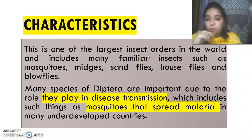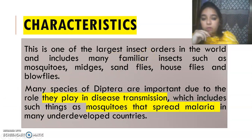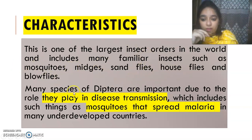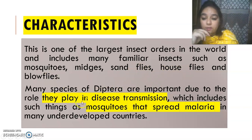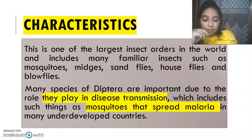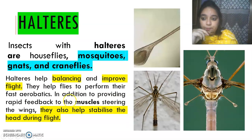This is one of the largest insect orders in the world, and it includes mosquitoes, midges, sand flies, house flies, and blow flies. Many species of Diptera are very important because they play an important role in disease transmission, as we know about mosquitoes that spread malaria in many underdeveloped countries.